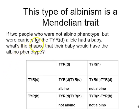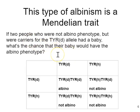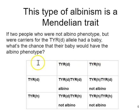Oculocutaneous albinism is inherited according to Mendelian patterns, so it is a Mendelian trait. Let's ask: if two people who are not albino but are carriers for the TYR-D allele had a baby, what's the chance their baby would have the albino phenotype? First, let's consider the genotypes of the parents. They're carriers, which means they're heterozygous — TYR-D / TYR-H. When they produce gametes, one type will contain TYR-D and the other TYR-H. Both parents are the same, so the gametes on each axis of the Punnett square are identical.